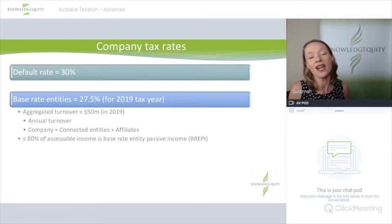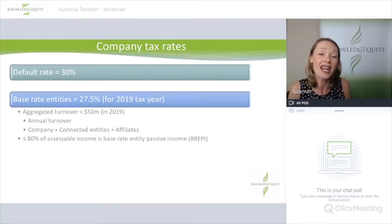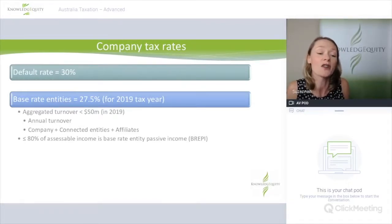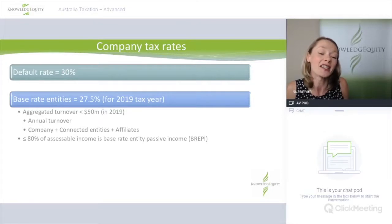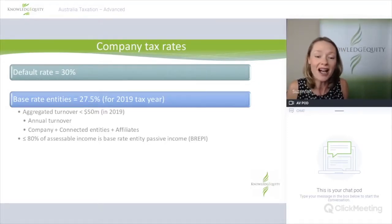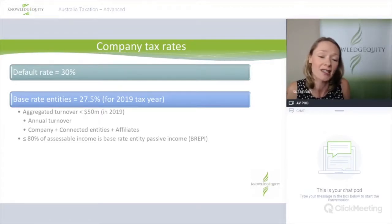Let's look at our company tax rates. For years in Australia, companies were only subject to a single tax rate of 30%, but relatively recently that changed into a system with two separate tax rates. Company tax rates are proportionate taxes — the rate does not increase or decrease as taxable income increases. The default rate for large companies is 30%, but if you qualify as a base rate entity, you only pay tax at 27.5% for the 2019 tax year, with this rate expected to be reduced further over the next few years.